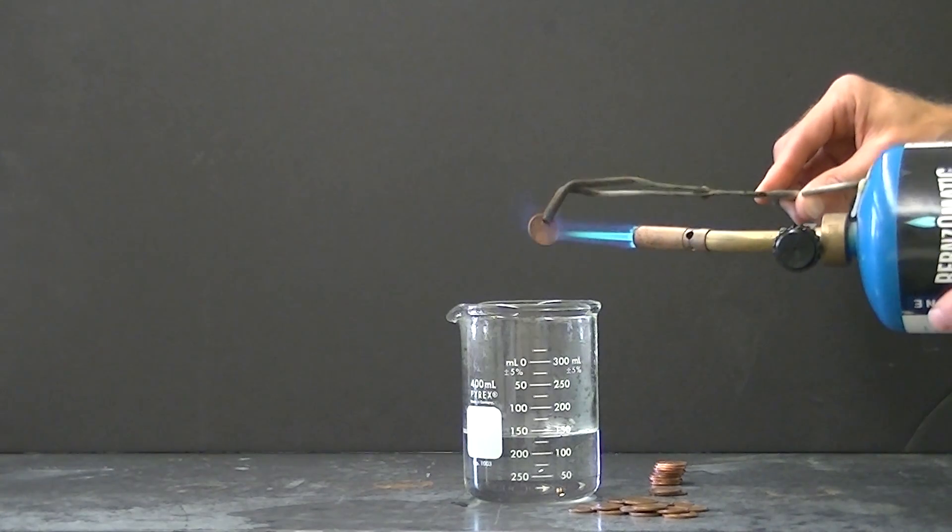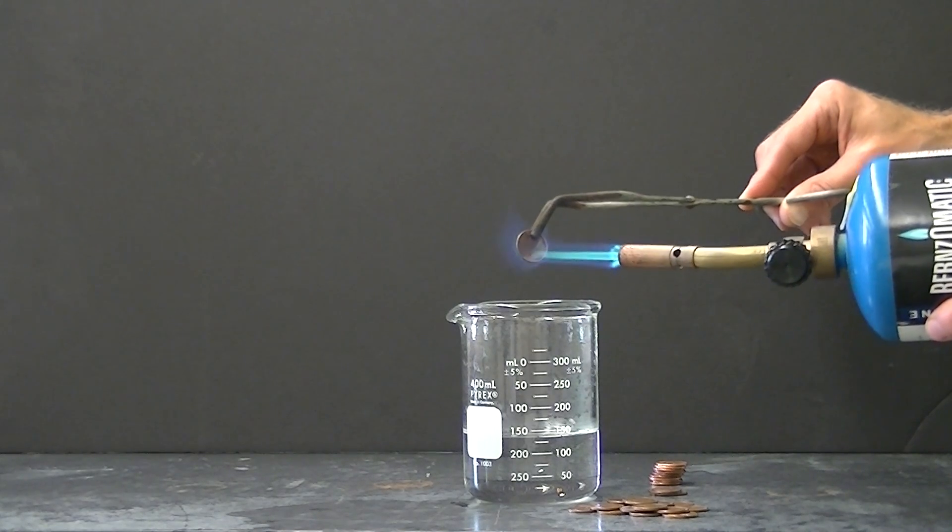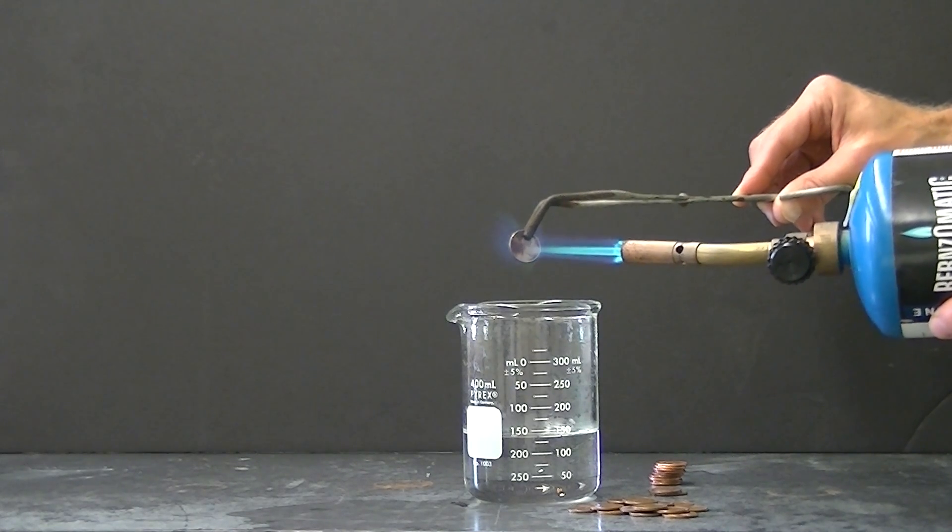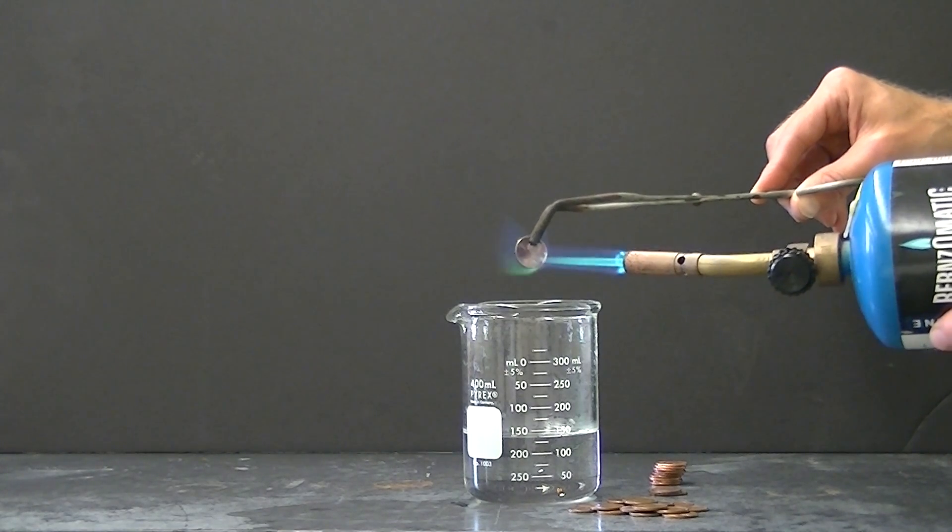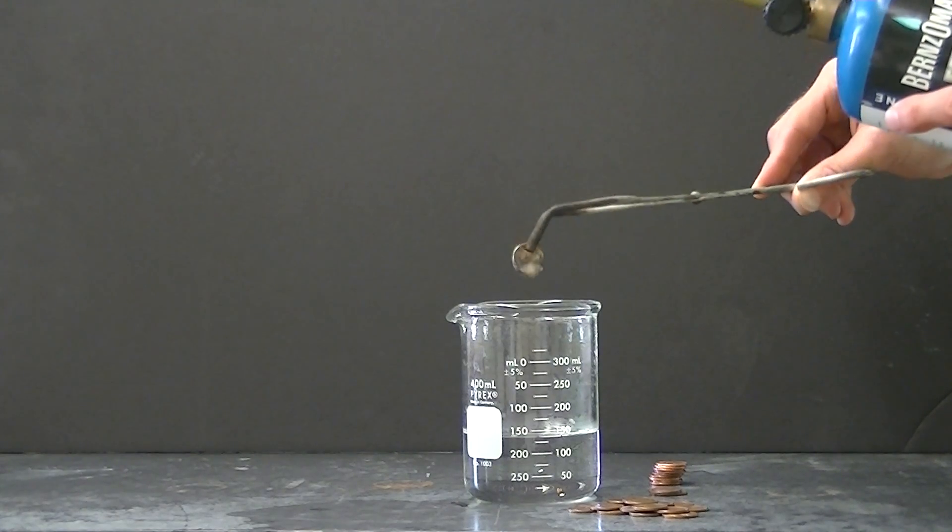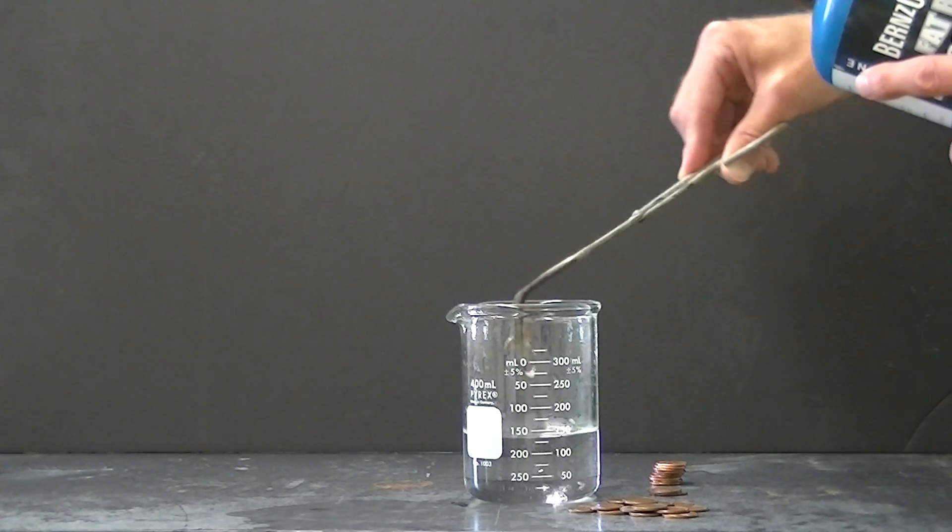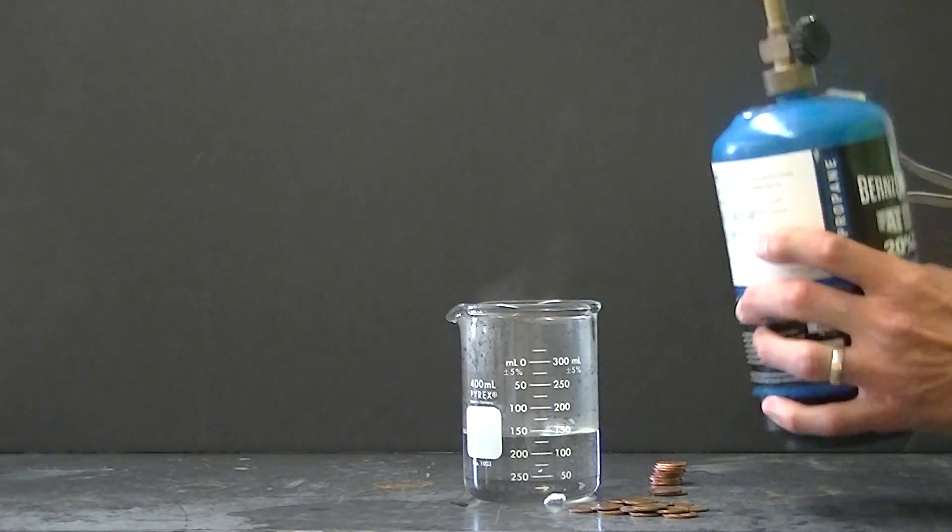Again this new penny has a zinc core that melts at 419 Celsius and as I heat the penny it looks like a fluid-filled sack forms that's held by the copper coat. When that happens I heat just a little longer and then shake my wrist and that gets the molten zinc core to drip out.